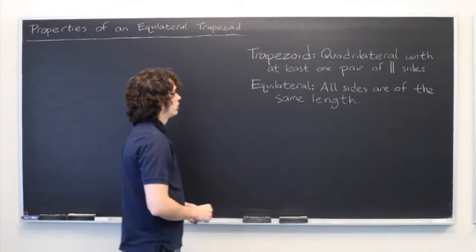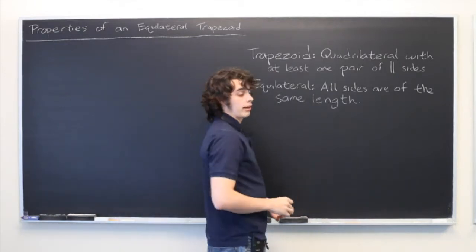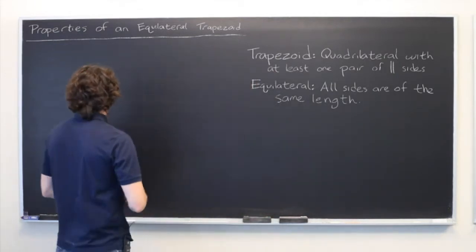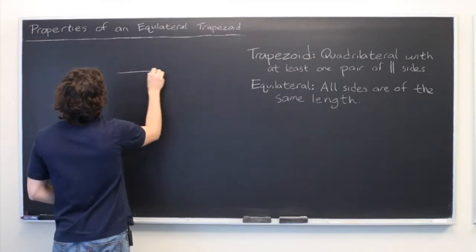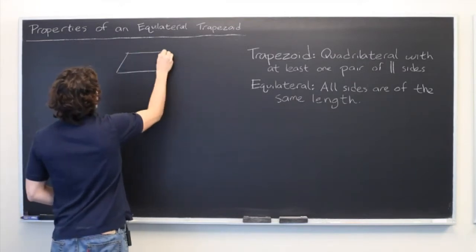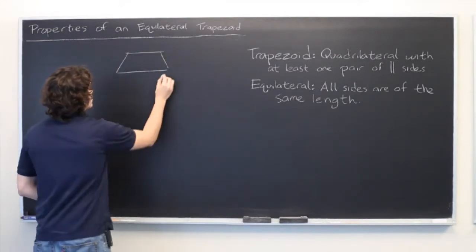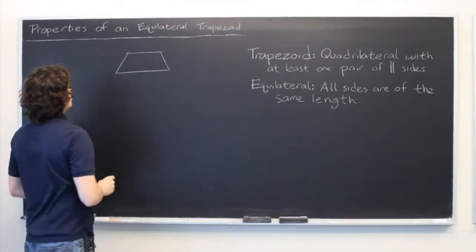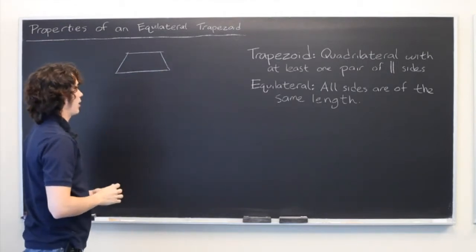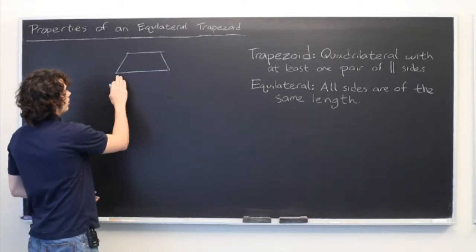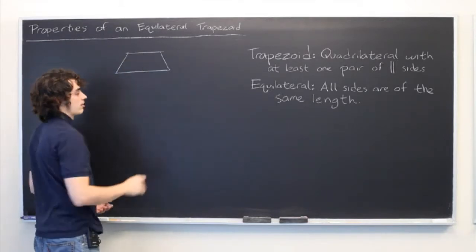Equilateral simply means that all sides are of the same length. So while you may typically see a trapezoid looking something like this, it's not possible for this to be equilateral because, as you can clearly see, the bottom base is larger than the top base.